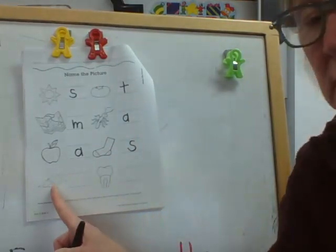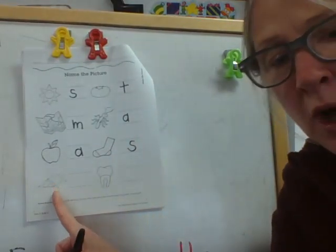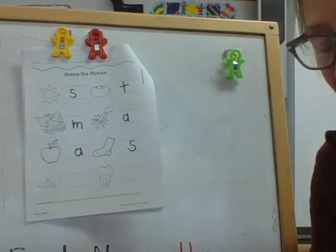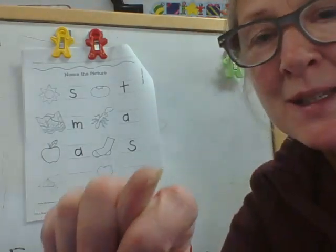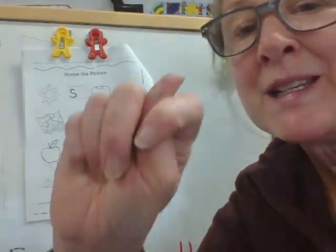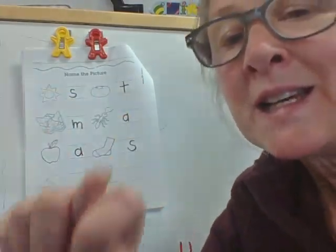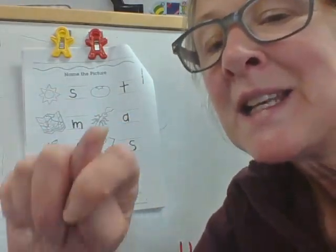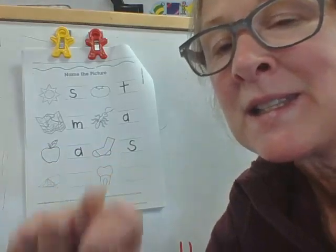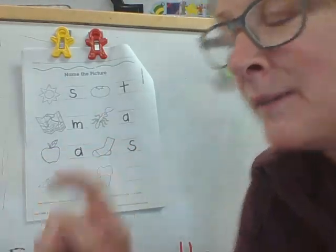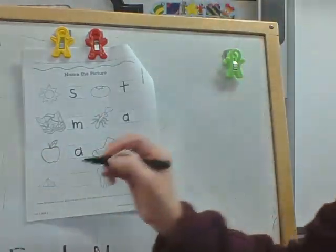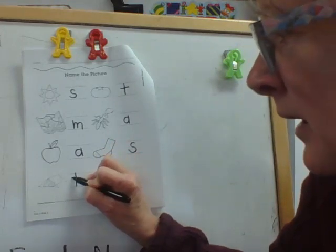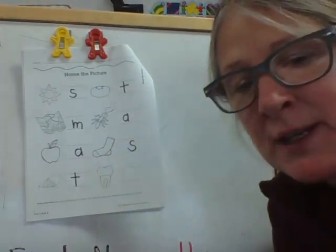We've got two more to go. What would you call this? I would call that a tent too. Let's bounce. T-t-tent. T-t-tent. T-t-tent. It's the letter T. Big line, frog hop, little line — letter T.